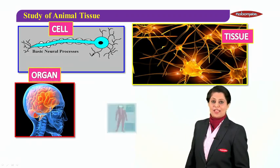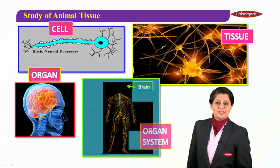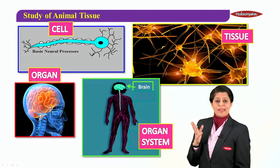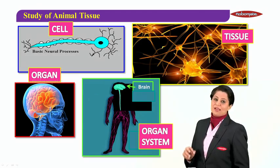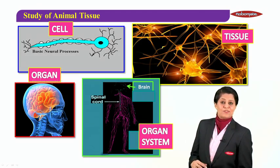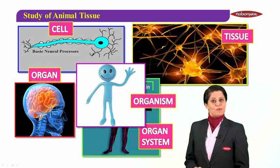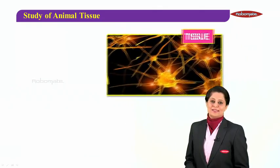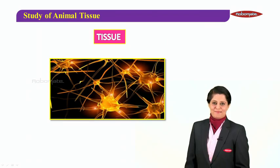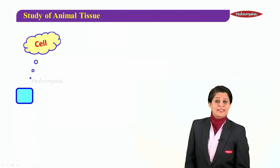Similarly, groups of tissues together form an organ, and various organs together form an organ system. Here you're seeing the nervous system — an organ system. Many such systems in your body — the nervous system, excretory system, respiratory system, and others — together make up what we call an organism.